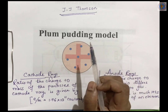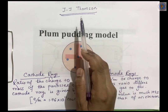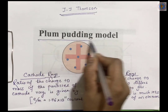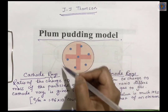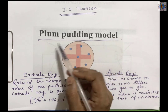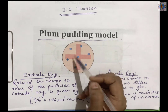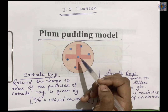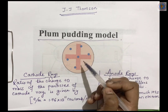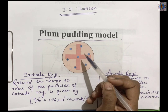Now let us learn the plum pudding model. After the discovery of electrons and protons, J.J. Thomson proposed the plum pudding model. According to this model, an atom is considered to be a sphere of uniform positive charge and electrons were embedded in it like plums in a pudding. The total number of positive charges is equal to the total number of negative charges present in an atom so that the atom as a whole is electrically neutral. The mass of an atom is considered to be uniformly distributed — that means the distribution of electrons and protons was uniform.